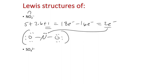If we want to continue the structure, the question is: can we get nitrogen to satisfy the octet rule using multiple bonds? But we need to look at formal charges first. Nitrogen should have five electrons around it for a neutral charge, but here it only has four. So the formal charge is 5 minus 4, which is plus one.